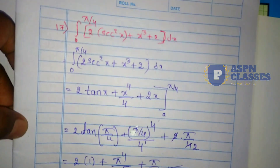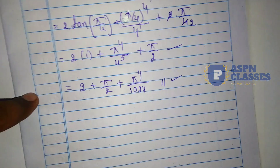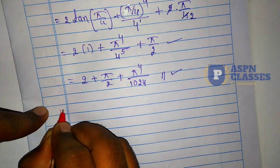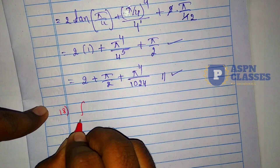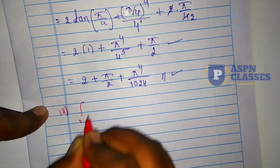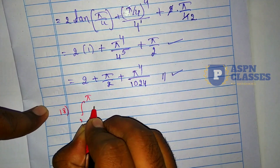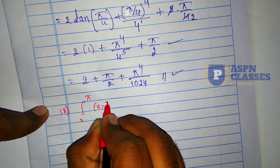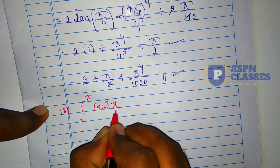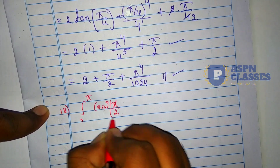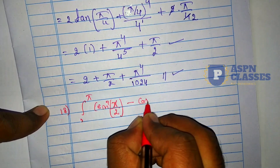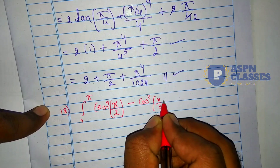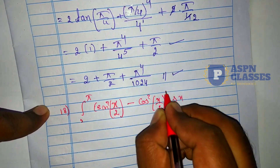Next, question number 18. This is a simple question with limit 0 to π: integration of (sin²(x/2) - cos²(x/2))dx.